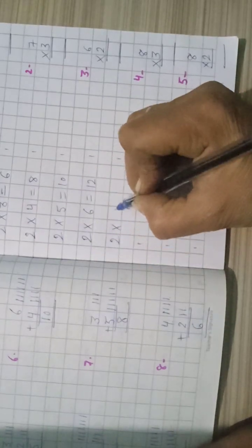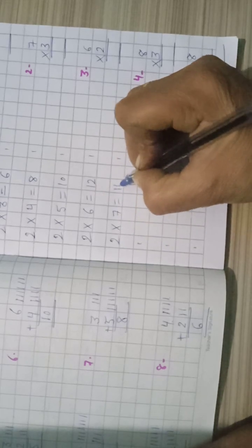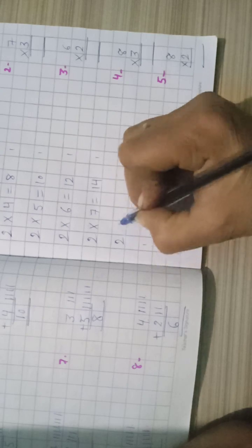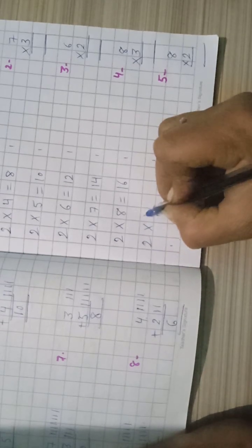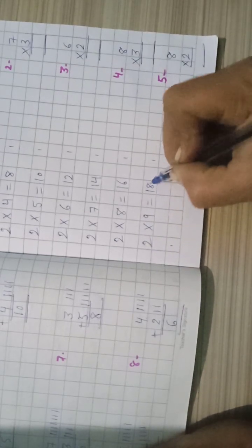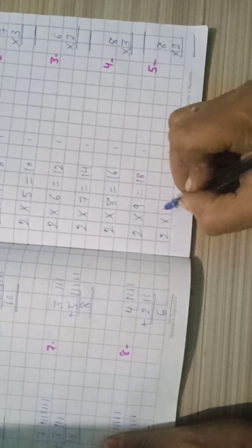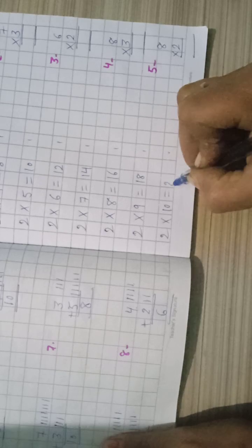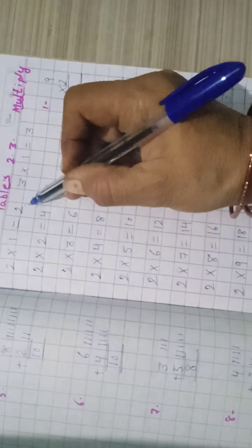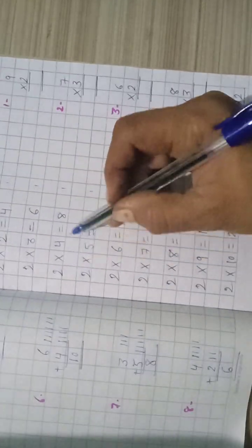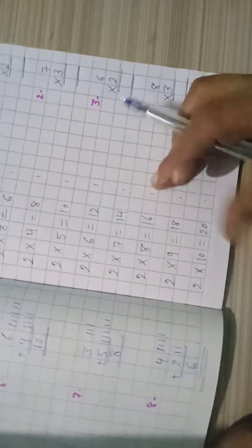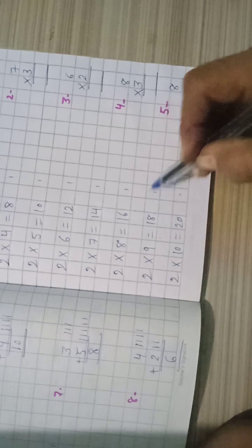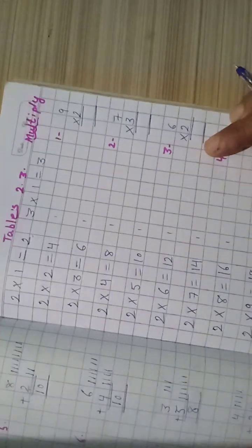2 × 7 = 14, 2 × 8 = 16, 2 × 9 = 18, 2 × 10 = 20. Repeat: 2 × 1 = 2, 2 × 2 = 4, 2 × 3 = 6, 2 × 4 = 8, 2 × 5 = 10, 2 × 6 = 12, 2 × 7 = 14, 2 × 8 = 16, 2 × 9 = 18, 2 × 10 = 20.